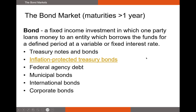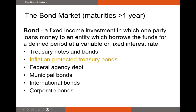Bonds come in many shapes and sizes — fixed income investments where one party loans money to another at a fixed or variable interest rate. Types include T-notes, T-bonds, TIPS (which pay returns tied to CPI/inflation), federal agency debt, municipal bonds issued by counties, cities, or states, international bonds, and corporate bonds issued by large firms.